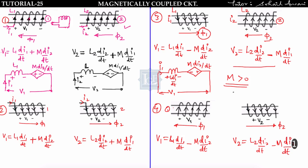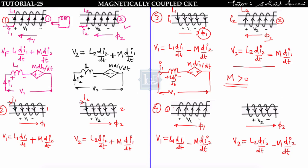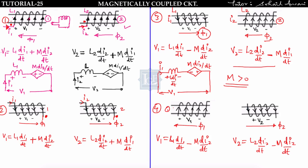In any complex circuit it is not possible to represent the current direction in an inductor and find the flux direction. So what we do is represent these four cases using dot convention. If current enters from the dot or leaves the dot simultaneously in both coils, then the mutual flux aids the main flux and the voltage induced by mutual flux is positive. This covers cases one and two.